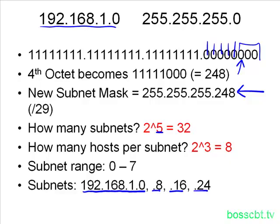Finally, how many of those hosts can we actually use to assign to computers or routers? The formula is 2 to the power of 3 minus 2 — one for the subnet number itself and one for the broadcast address — which gives us 6. So every time you find the total size, which is 8 in this example, always subtract 2, giving us 6. In each one of the 32 subnets, we have 6 IPs that we can assign to routers, switches, or hosts.